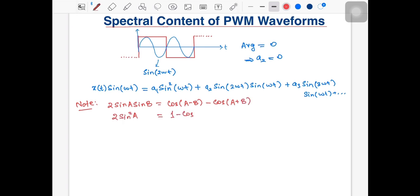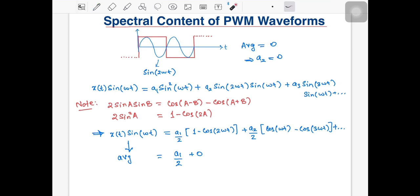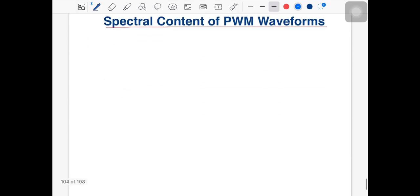Using these, we can simplify the product as a₁/2 times (1 - cos(2ωt)) + a₂/2 times (cos(ωt) - cos(3ωt)) and so on. If you compute the average, meaning the integral over 1 time period T divided by T, then you will notice that only this term consisting of a₁/2 remains. Rest are all 0. Thus, the average gives a direct estimate of a₁. In this case, to be more precise, it's equal to a₁/2.